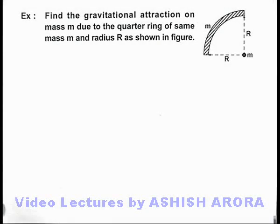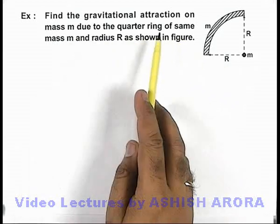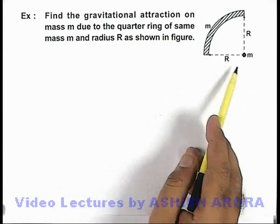In this example we are required to find the gravitational attraction on mass m due to the quarter ring of same mass m and radius R as we can see here.